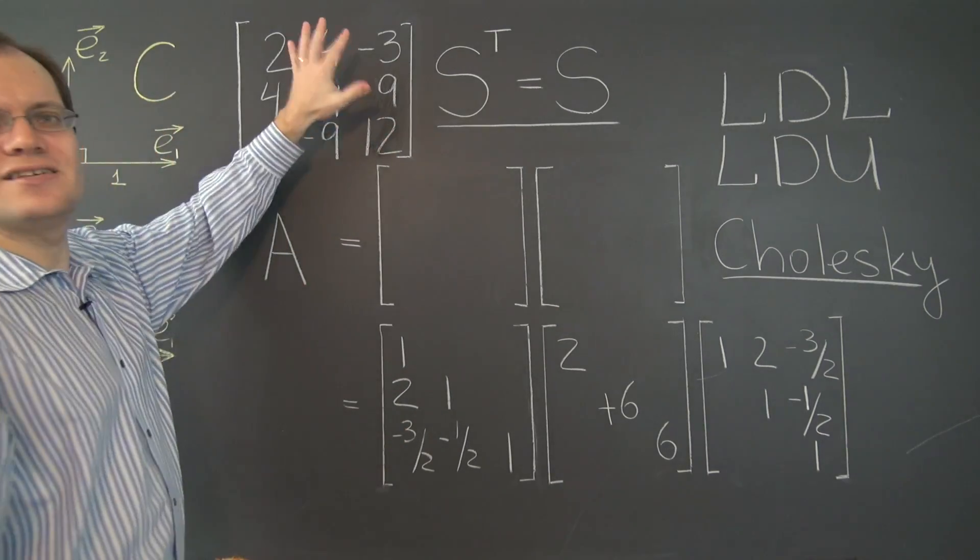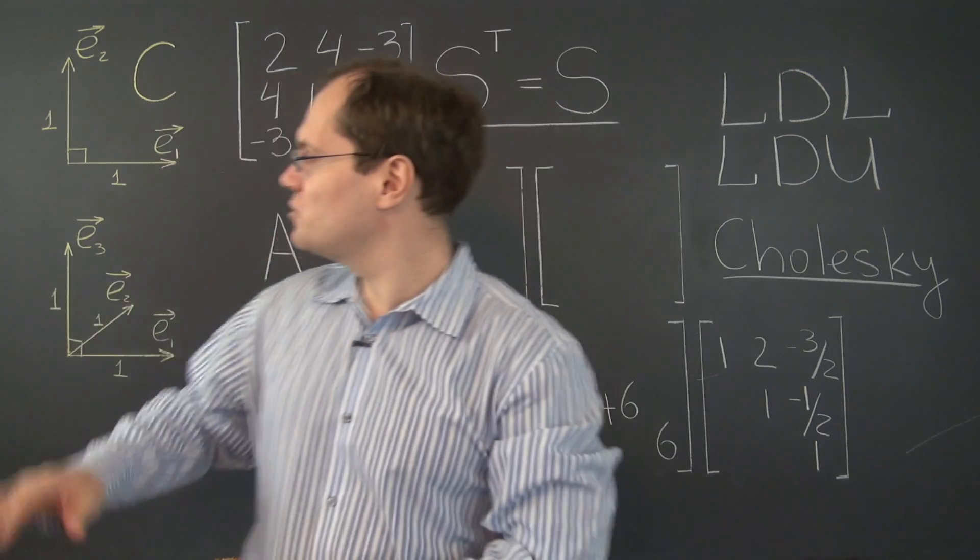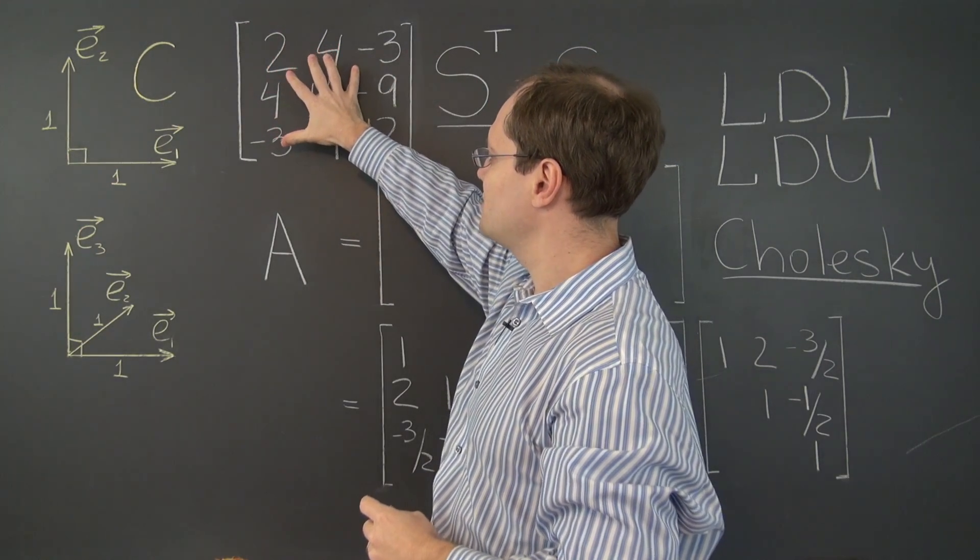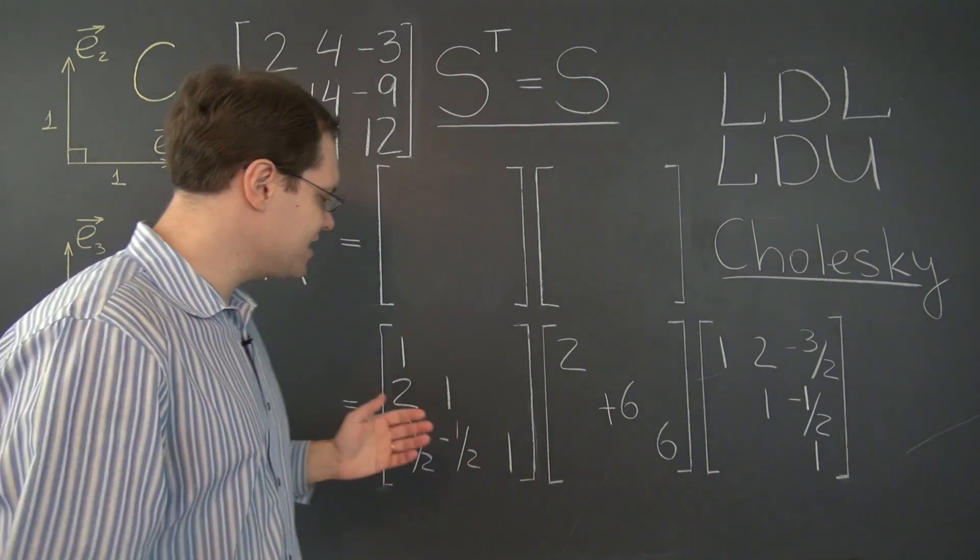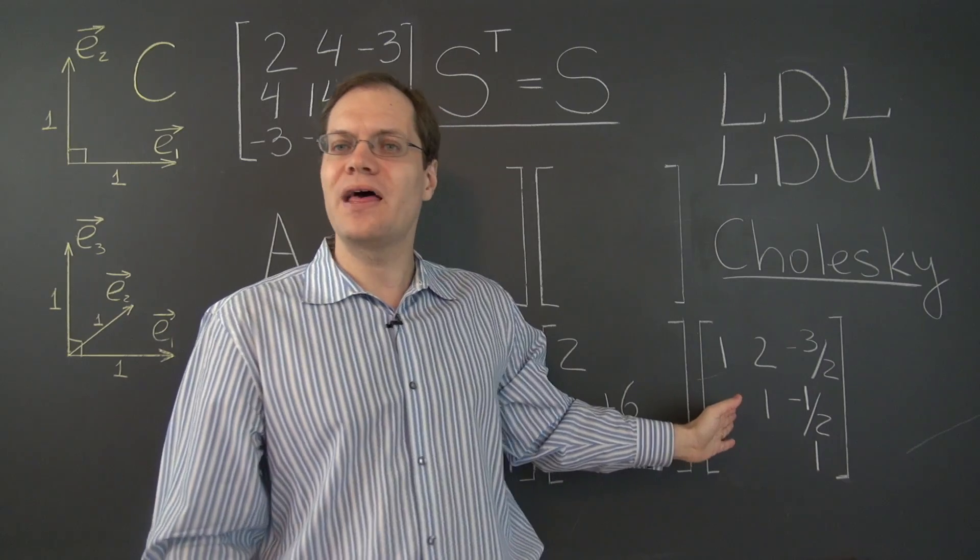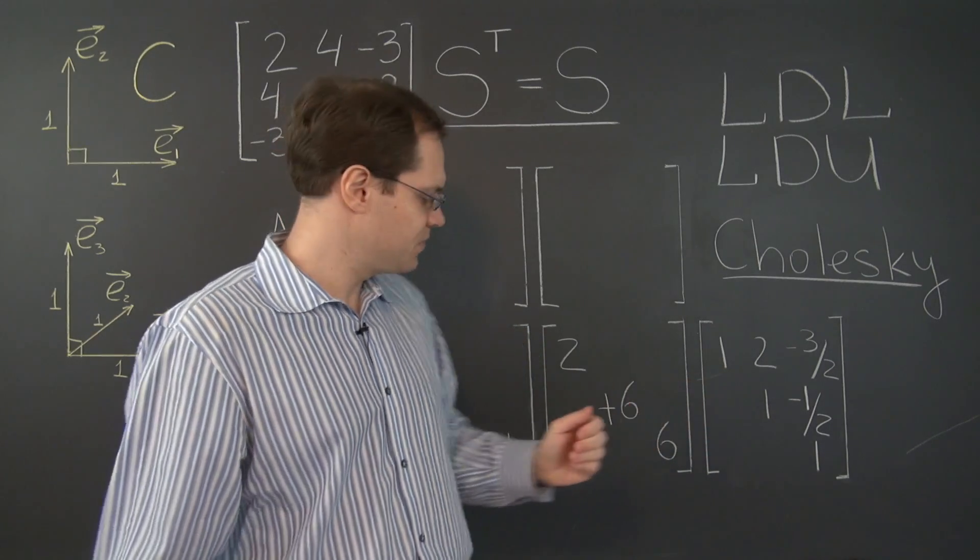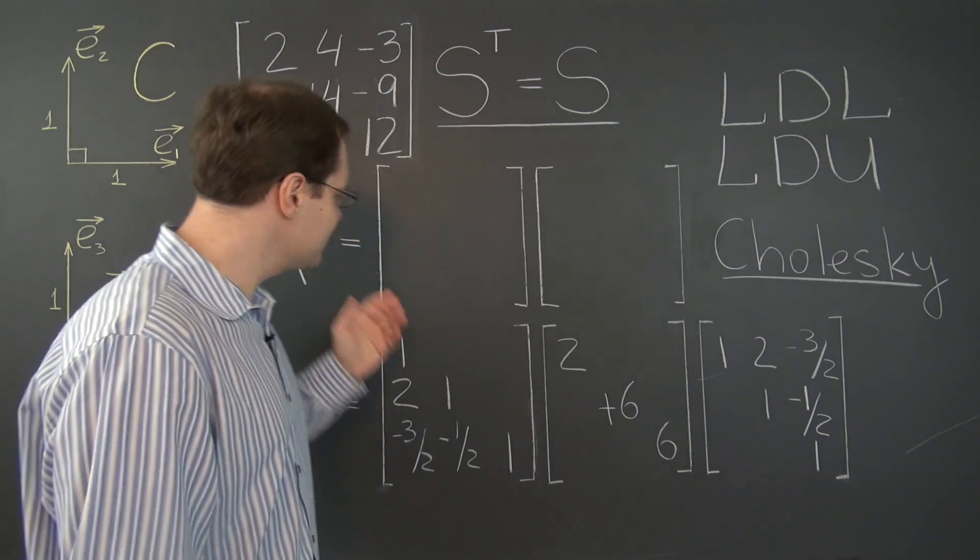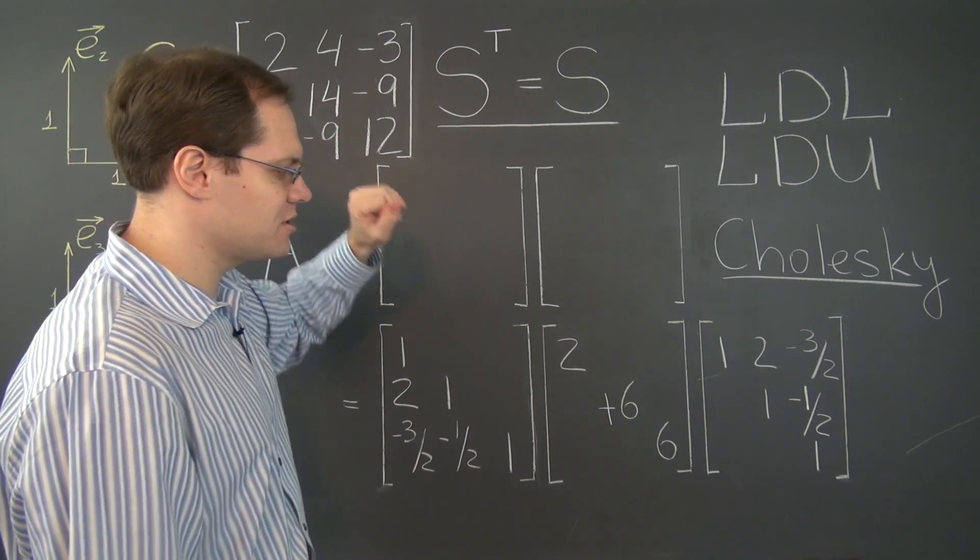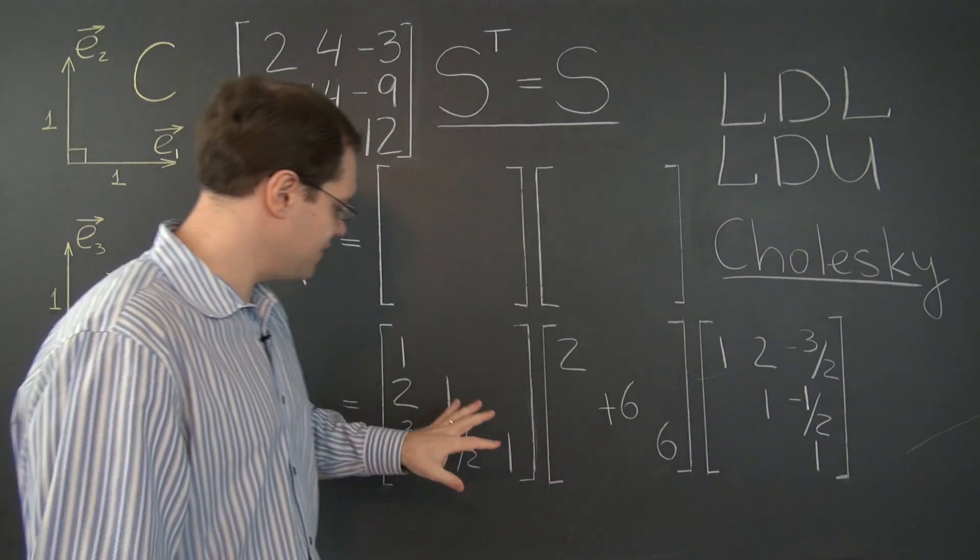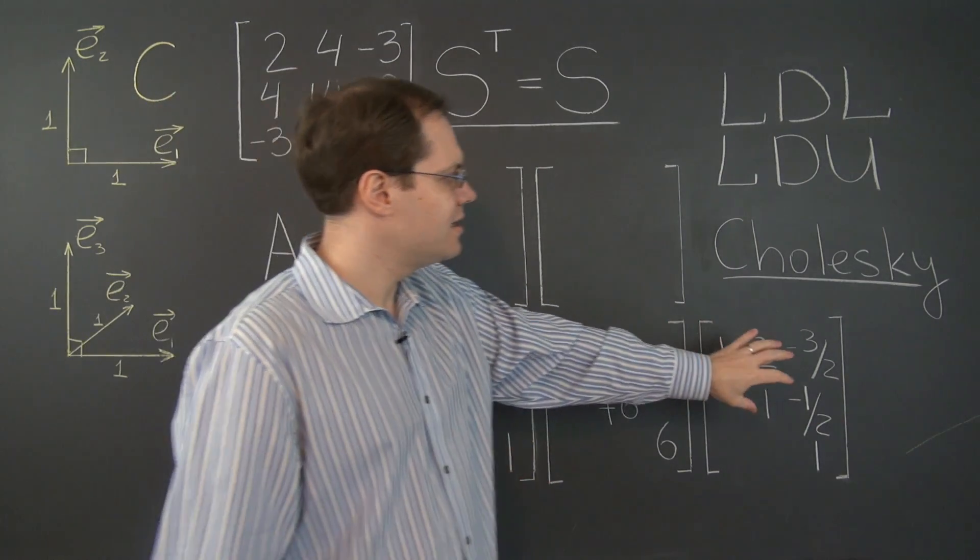So pretend that this is our starting point. We're going to find the LDU decomposition of this matrix. And if you follow all of the steps, even though I did it backwards, you'll end up with this LDU decomposition. L, D, U. And because this matrix is symmetric, U ends up being the transpose of L. So we have L, D, L transpose.